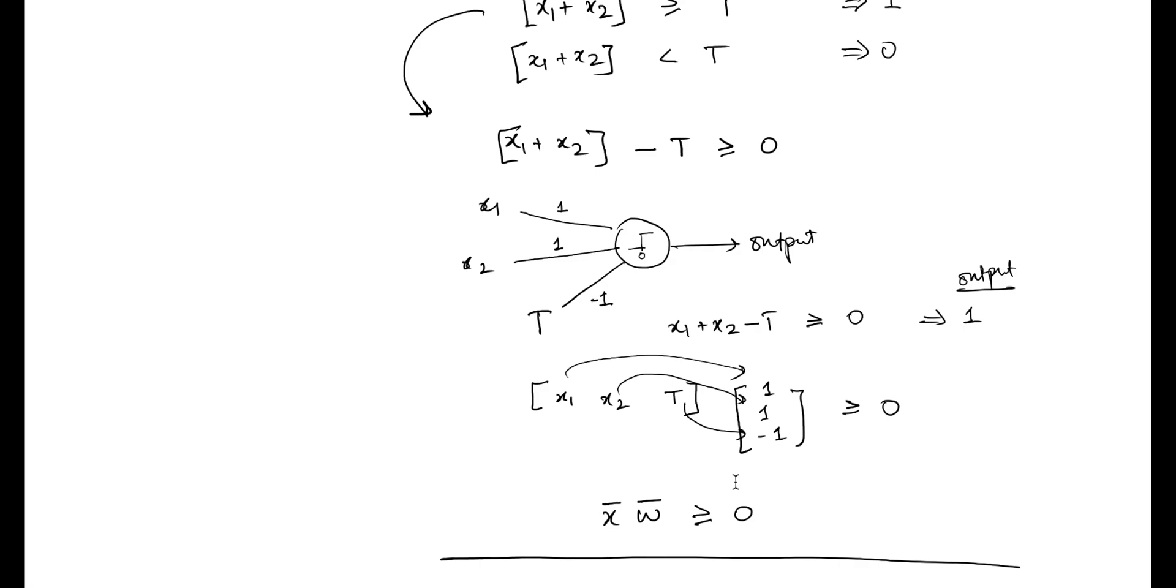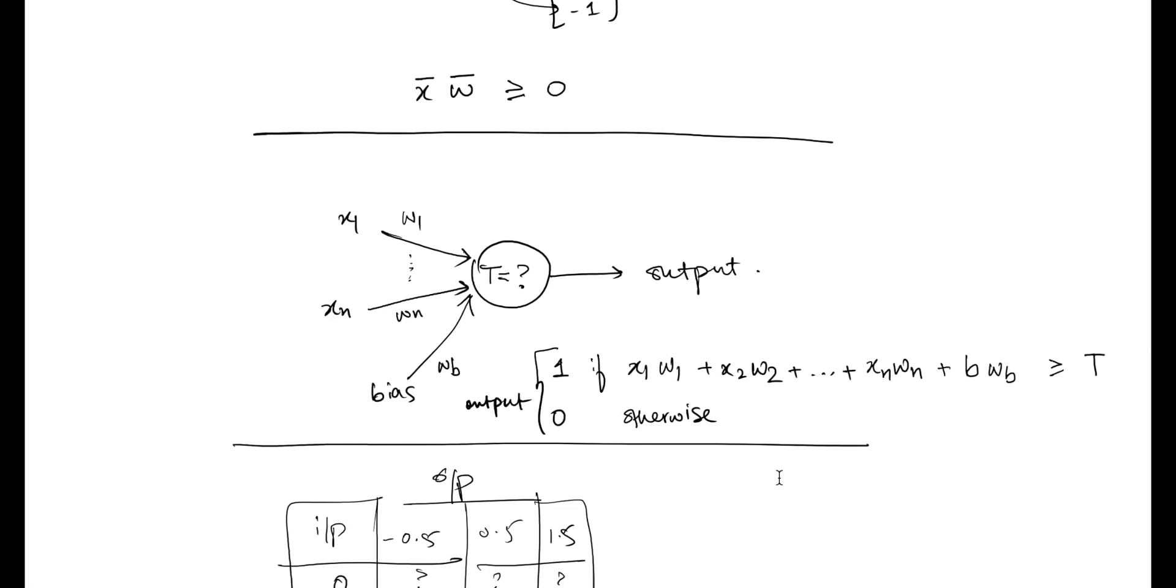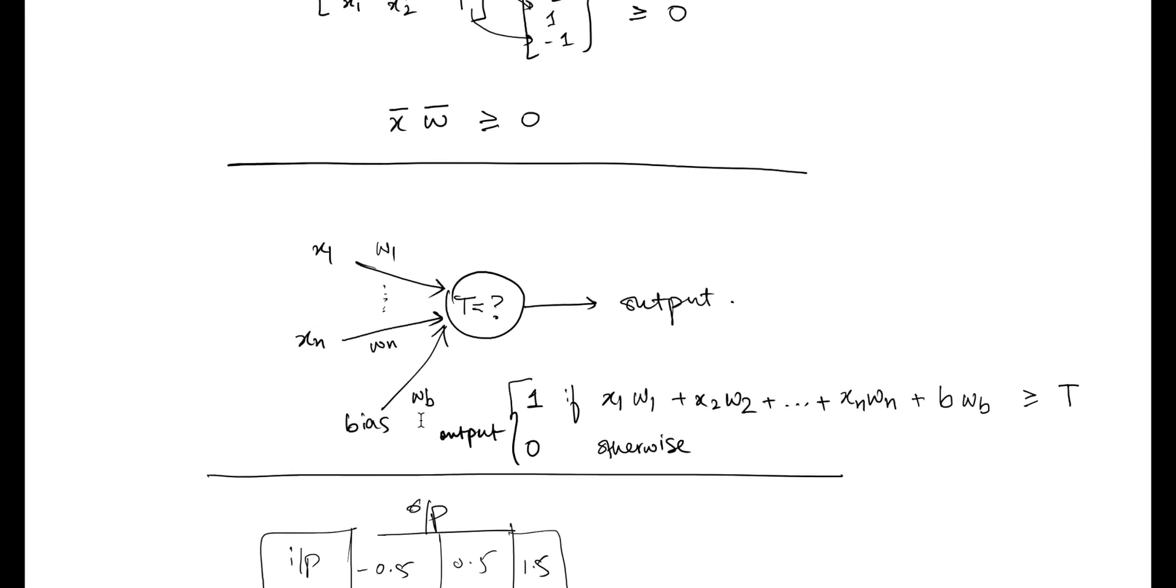There was another implementation we then looked into, which required that we kept the threshold there, introduced a bias and a weight associated with the bias on the inputs, and then do whatever we did earlier on.